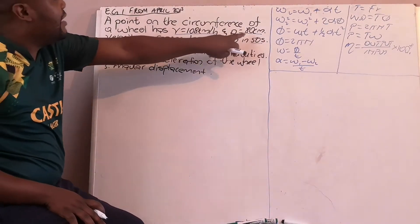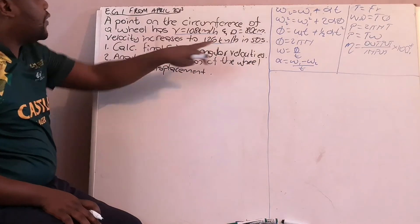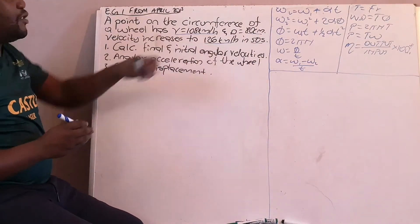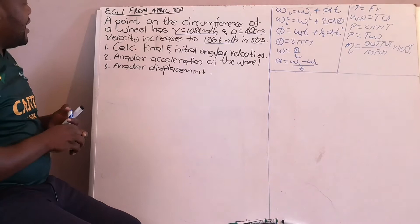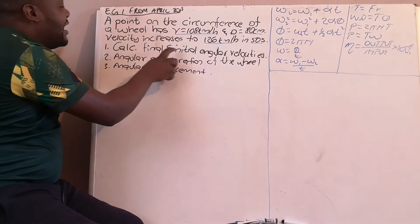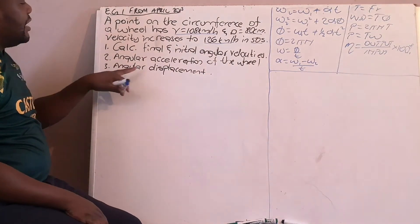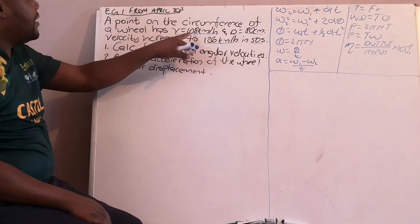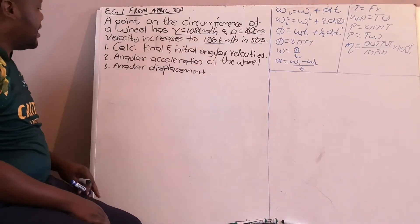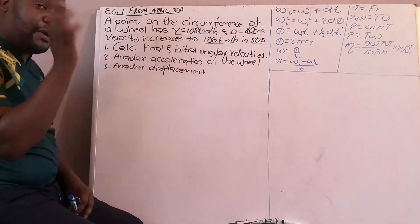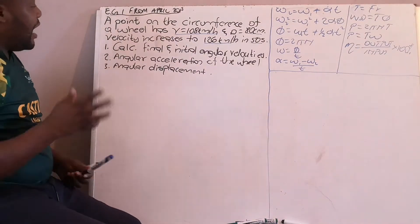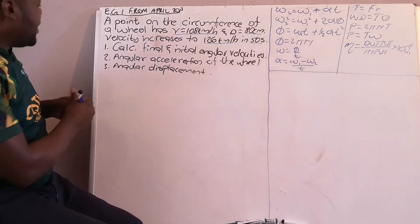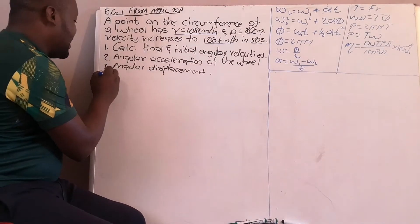You have your initial angular velocity, your final angular velocity, the diameter of the wheel, and the time it took to go from 108 to 126. You need to calculate the initial and final angular velocities, the angular acceleration from 108 to 126, and then the angular displacement. We will first write our data down.